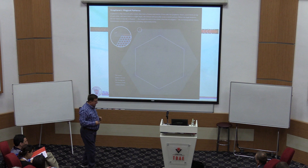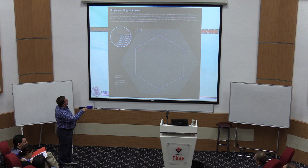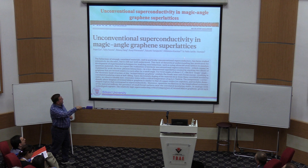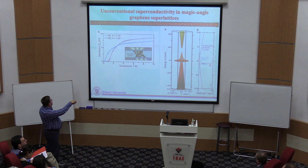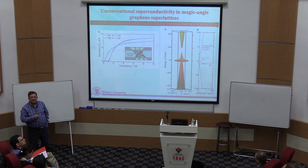Then last year, in 2018, just at the week of the APS March meeting, an experiment was reported. The rotation angle is very small — just 1.1 degrees. This was the paper from the Harvard Jarillo-Herrero group. They published two papers in Nature that very week. Their resistance as a function of temperature shows that at some point, around one Kelvin, it drops to zero — it became a superconductor.